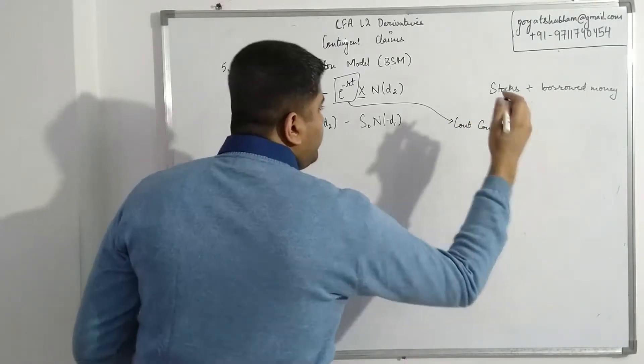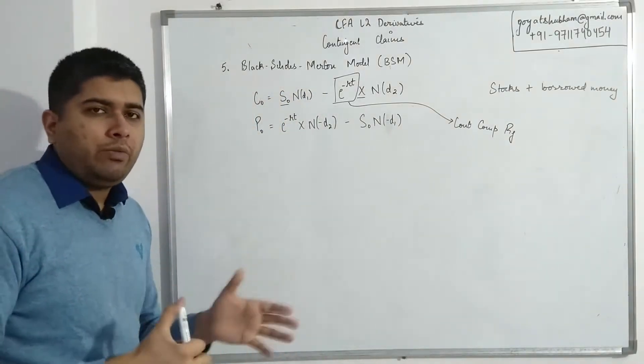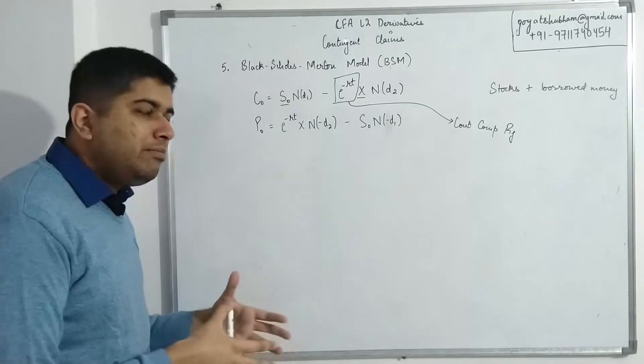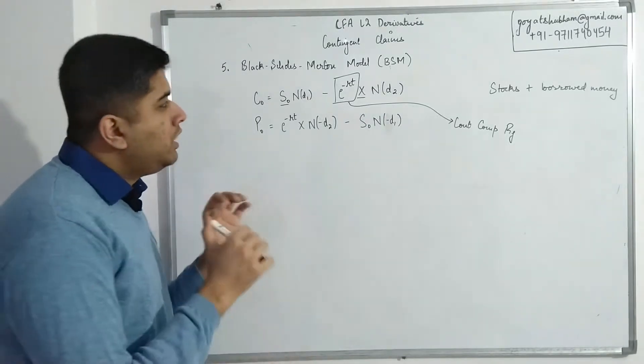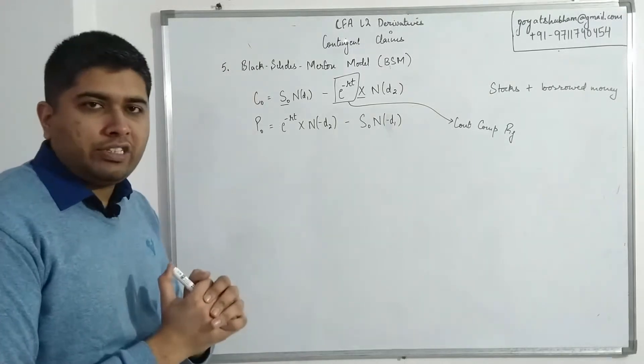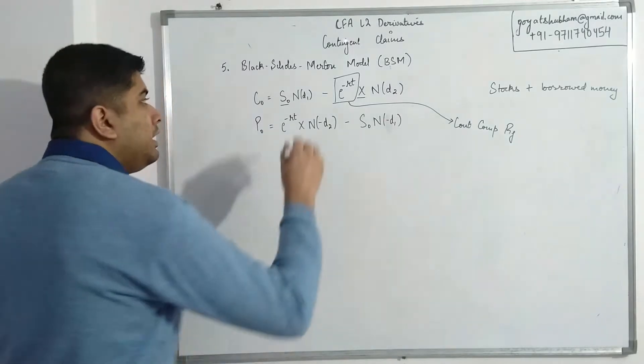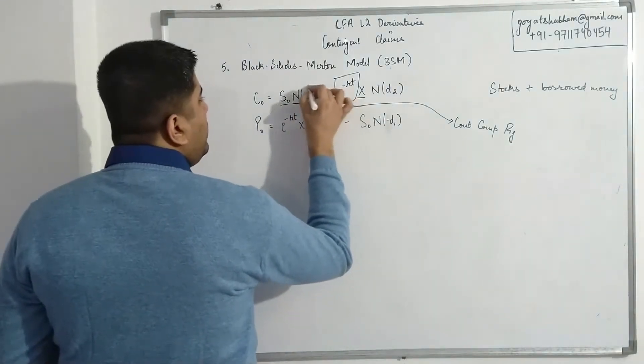These have a few elements that need to be understood. First is this e^(-rt). This is simply continuous compounded risk-free rate. Instead of using any particular rate, we use the risk-free rate, and in the BSM model we use the continuous compounding instead of a regular compound interest.